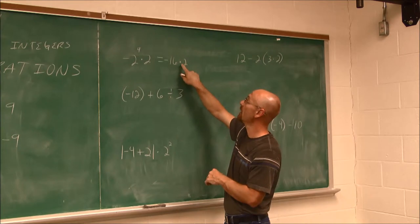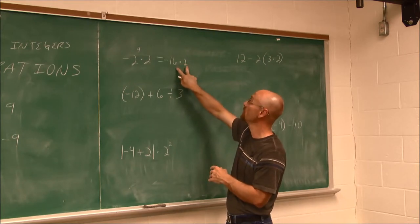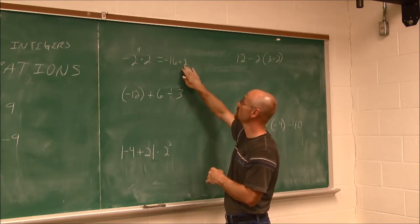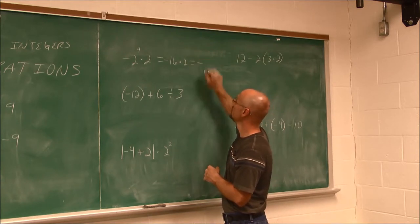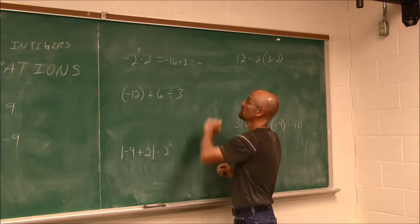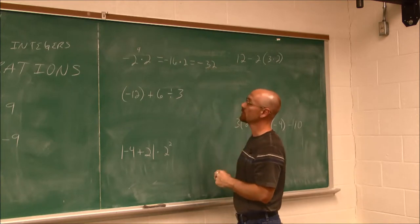So now I can say, OK, I can multiply. If I see here I have two numbers, negative 16 times 2. Well, there's only one negative, so it's negative. 16 times 2 is 32. We get negative 32.